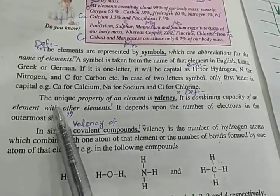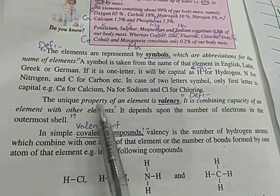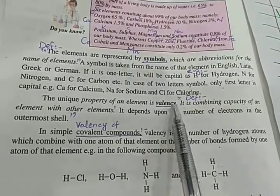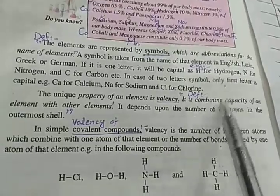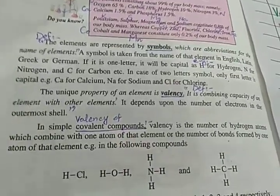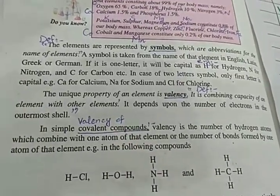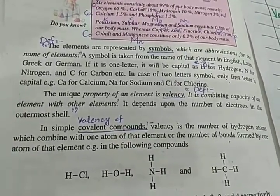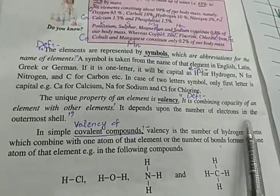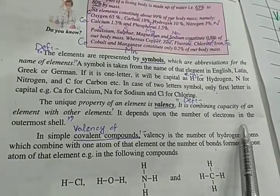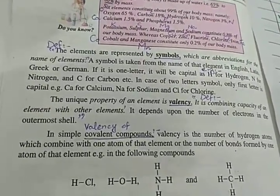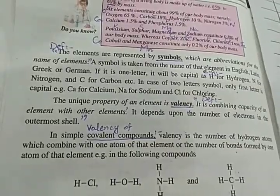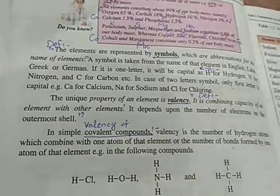Next is valency. The unique property of an element is valency. The definition is: valency is the combining capacity of an element with other elements. It depends upon the number of electrons in the outermost shell.